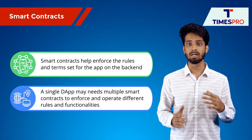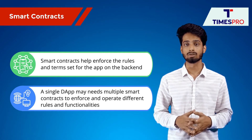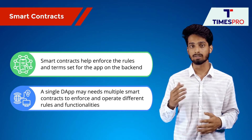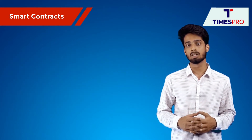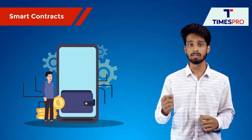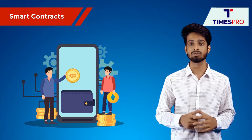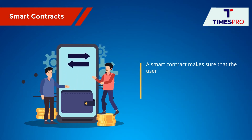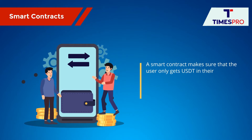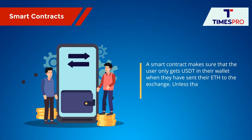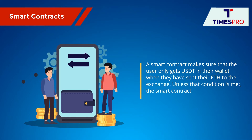What are smart contracts? In short, smart contracts are lines of code that form digital contracts on a blockchain, and they take a predetermined action when certain predefined conditions are met. In the case of D-apps, smart contracts help enforce the rules and terms set for the app on the backend. And a single D-app may need multiple smart contracts to enforce and operate different rules and functionalities.